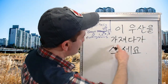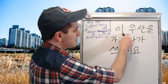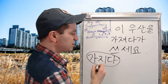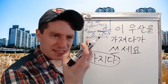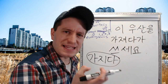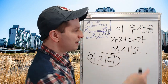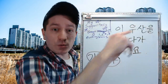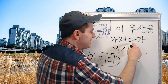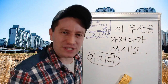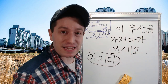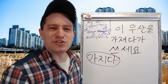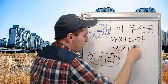이 우산을 가져다가 쓰세요. 가져다가 comes from 가지다, meaning to take or have something on your person — you're holding it, possessing it. Take this umbrella at location A, right here, and then wherever you go — somewhere else — 쓰세요, use it. Using this form emphasizes that these two actions are happening in different places. So take it and then use it. 이 우산을 가져다가 쓰세요.